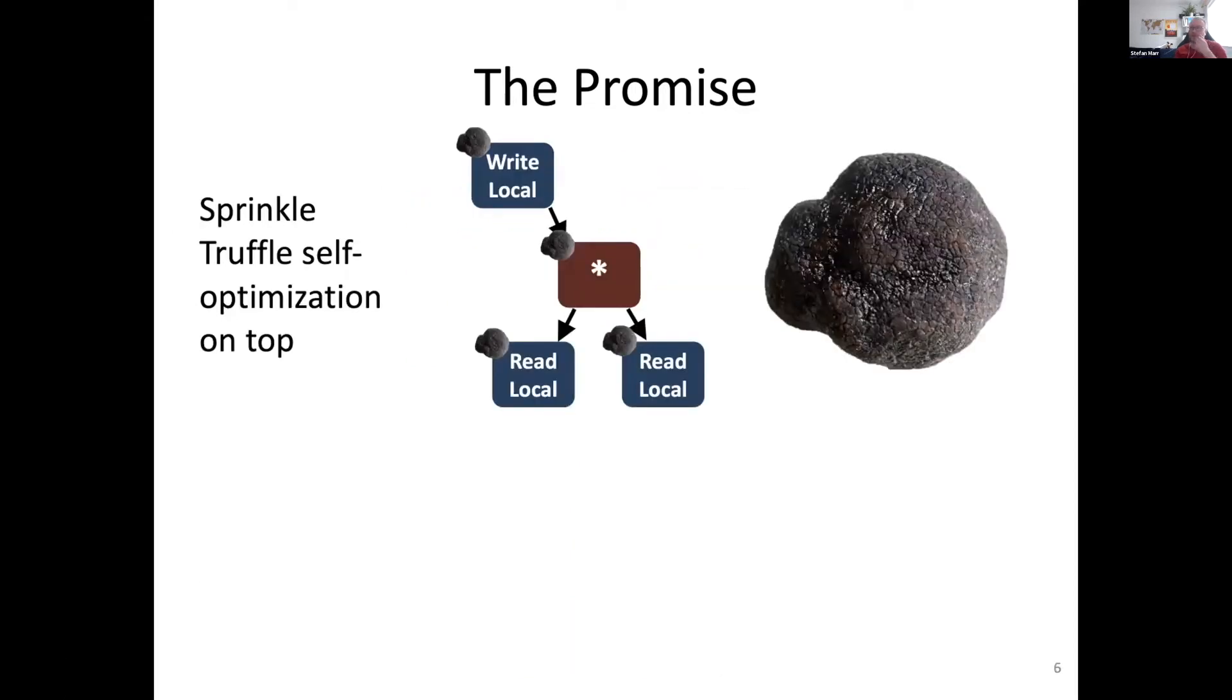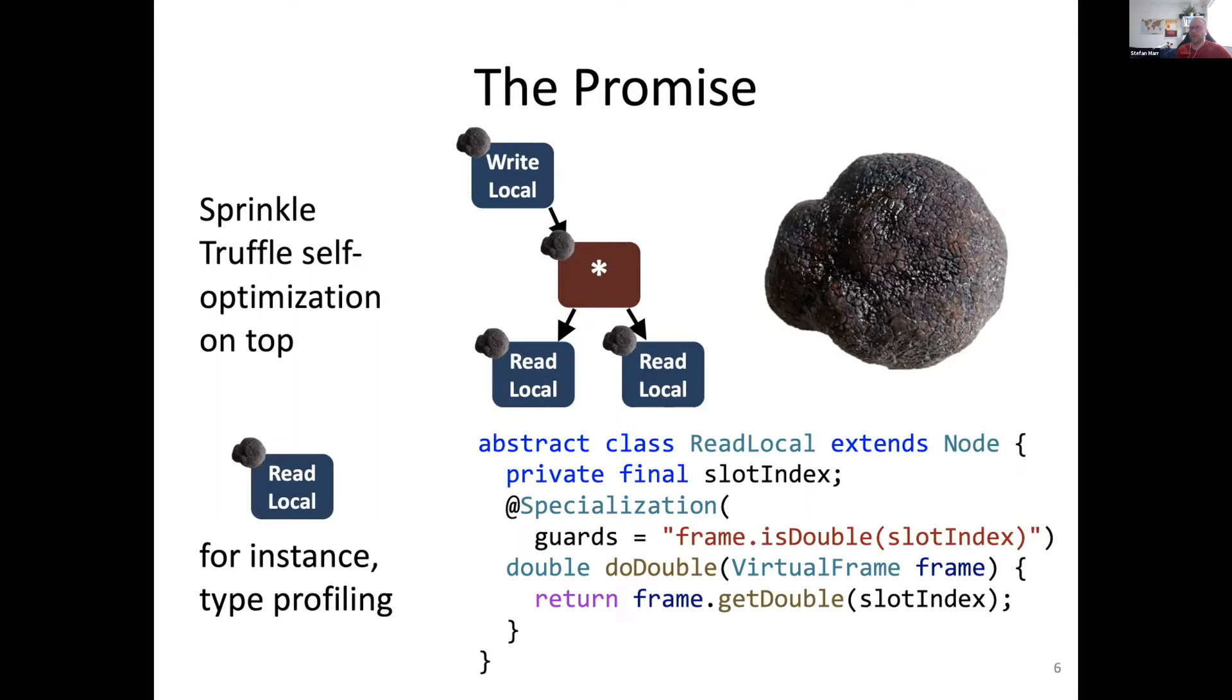The interesting part that Truffle gives you here is the ability to teach these nodes to specialize themselves to specific ways of being used, especially when we implement dynamic languages. One thing we need to get performance with a just-in-time compiler is we need to know exactly what type of values or what kind of specific things we saw at runtime to make things fast. We may want to know that things were actually double values. If you implement the read local node, you would add a little bit of specialization to read from Truffle's frame where you represent local variables as a double. Then the multiplication can know it's a double and can activate the right part of the implementation to compute double multiplication.